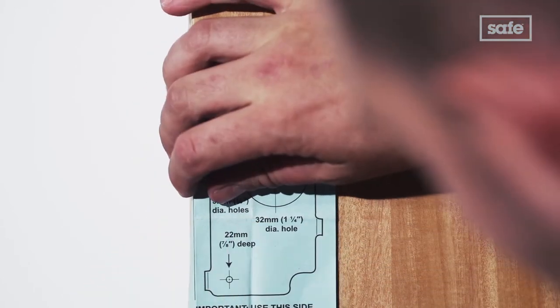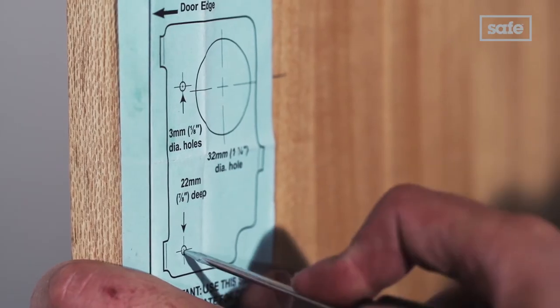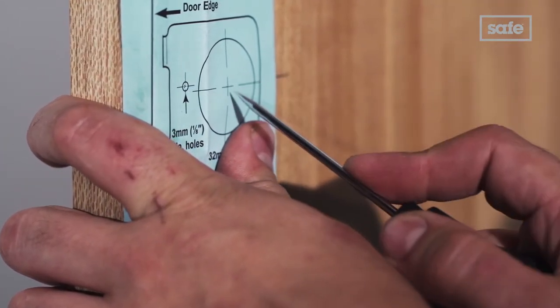If, like us, you've a template available, this will make the process much easier. Just attach it to the door at the line you drew and mark out the holes you'll need.